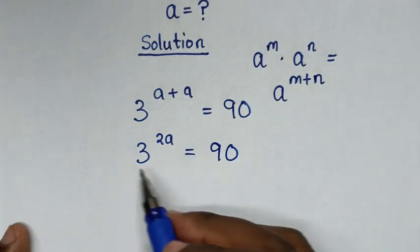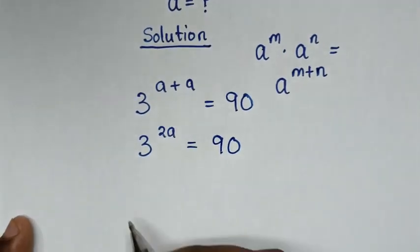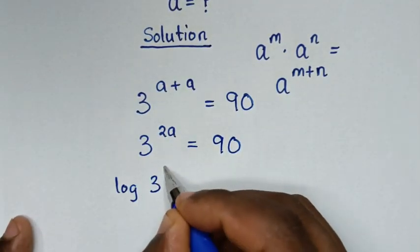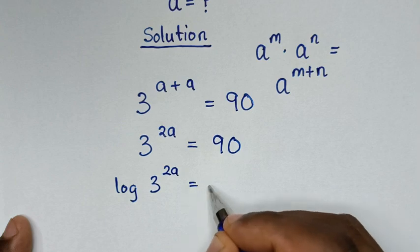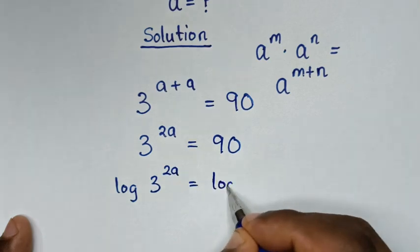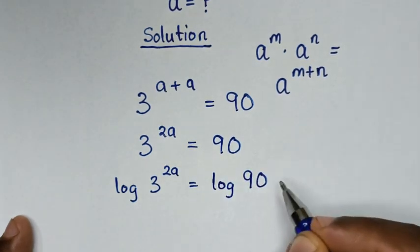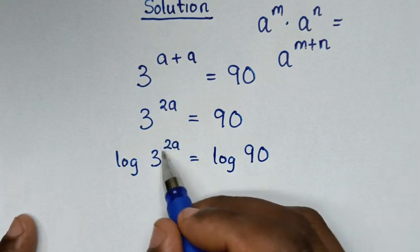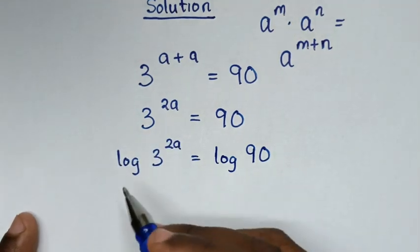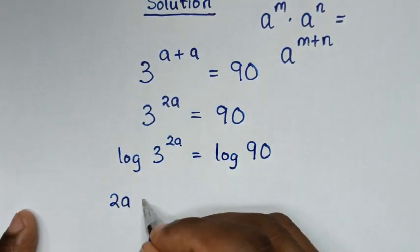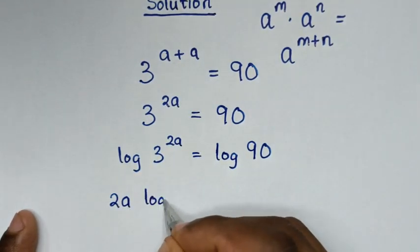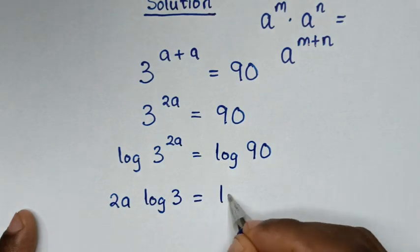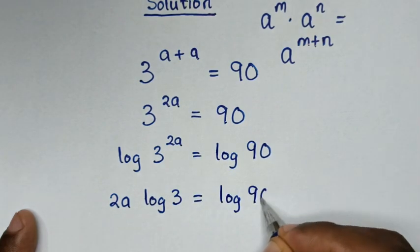Then we will apply log to both sides. So it will be log of 3^(2a) is equal to log of 90. Then the exponent 2a will move to the front, so it will be 2a·log(3) is equal to log(90).